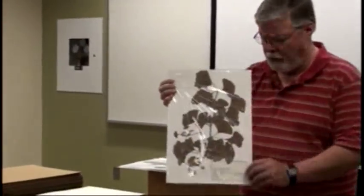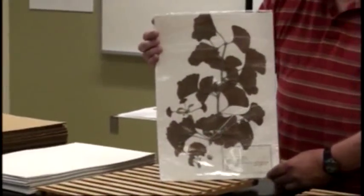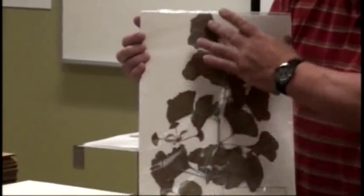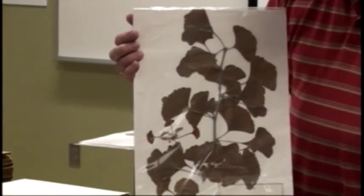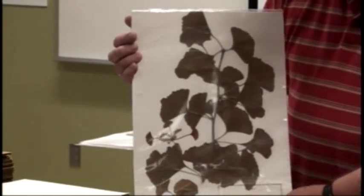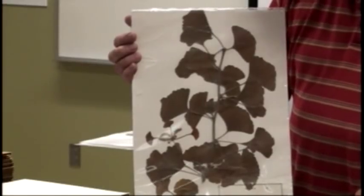This is an example of an herbarium mount. It is put out by a biological supply house. Basically we have a plant that is mounted on specific acid-free herbarium paper with a label down in the lower right-hand corner that gives information on this plant.